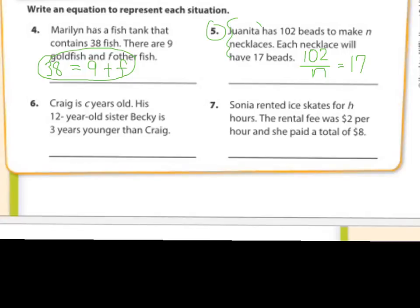Number six. Craig is C years old. His 12-year-old sister, Becky, is three years younger than Craig. Okay, so if you take Craig's age and you... If you take the age that Craig is and you subtract 12, you'll get three. Now, let me tell you that there's other ways to do this. Okay, that's not the only way. You could also take 12 and then three years younger than Craig. No, that's it. Alright,